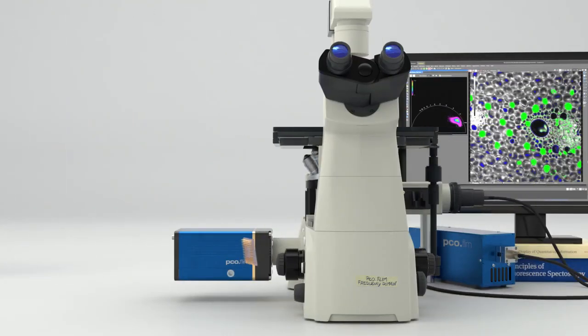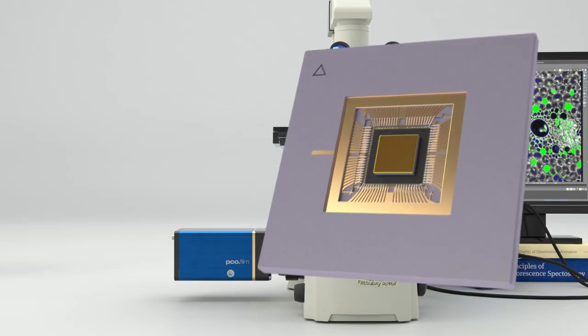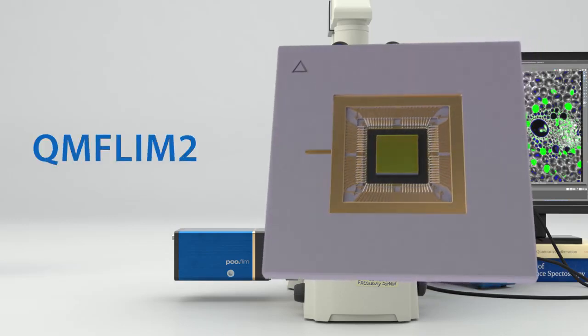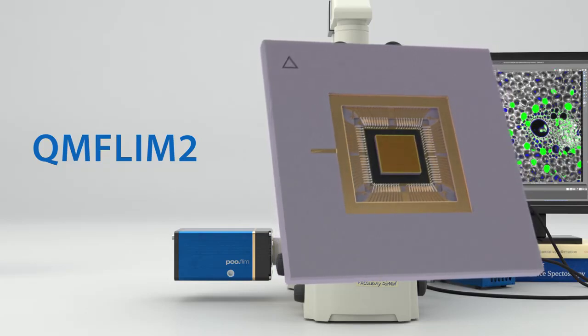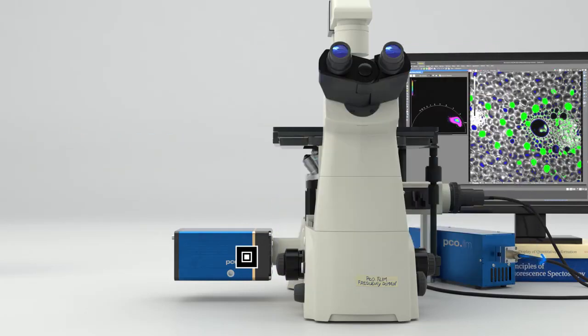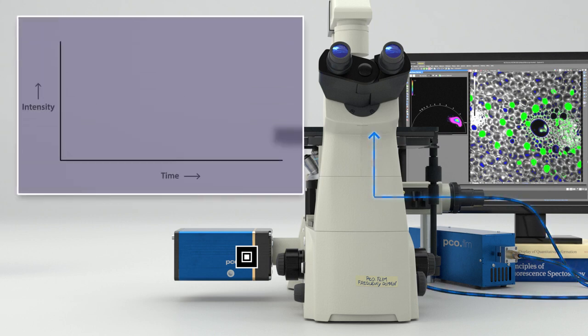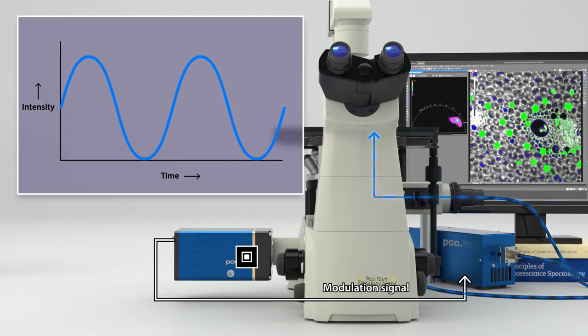By the development of a novel fast modulatable CMOS image sensor, the QM FLIM2, the so-called frequency domain method became more attractive. In this frequency domain approach, the intensity of the excitation light is continuously modulated using sine or square waves. The modulation source is the camera, which provides modulation frequencies ranging from 5 kHz up to 40 MHz, as well as the signal for dark gating.